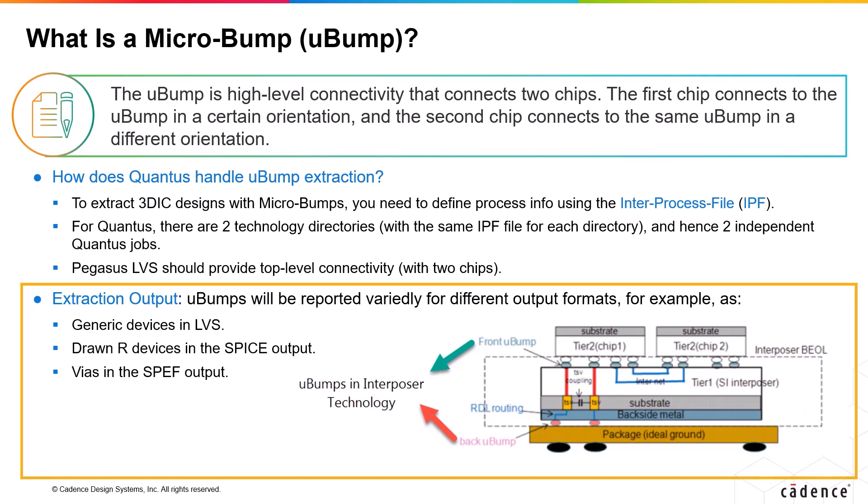Coming to the extraction output, the micro bumps will be reported differently for different output formats. For example, micro bumps will be reported as generic devices in the LVS flow, whereas they will be reported as drawn resistance devices in the SPICE extraction output, and as vias in the SPEF output.